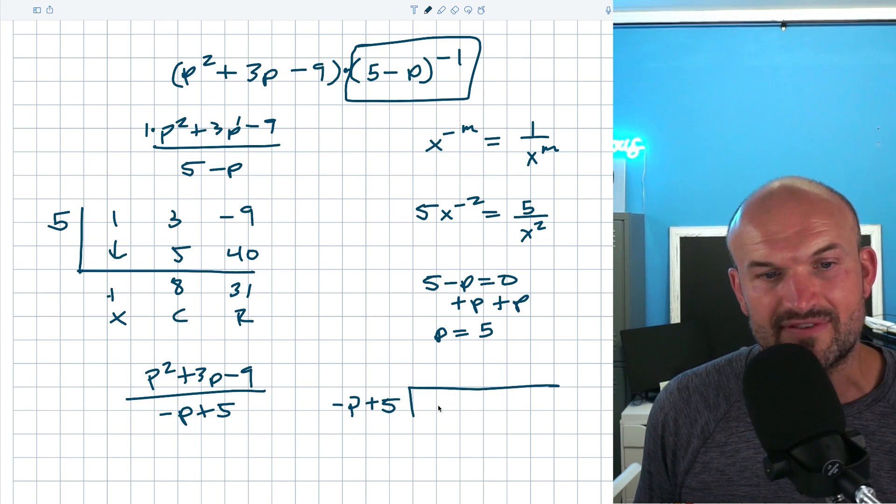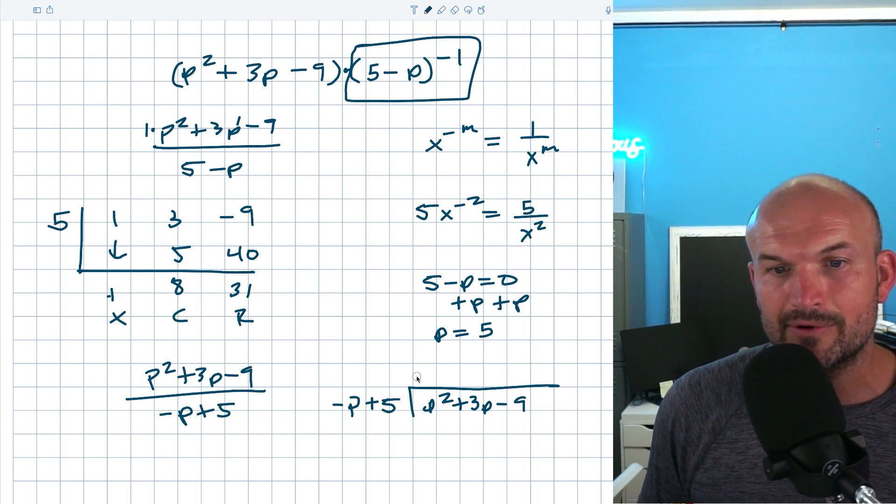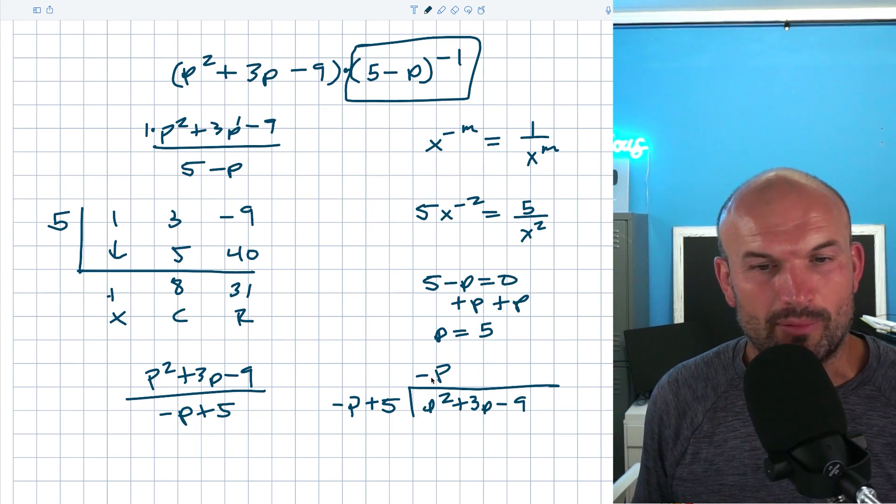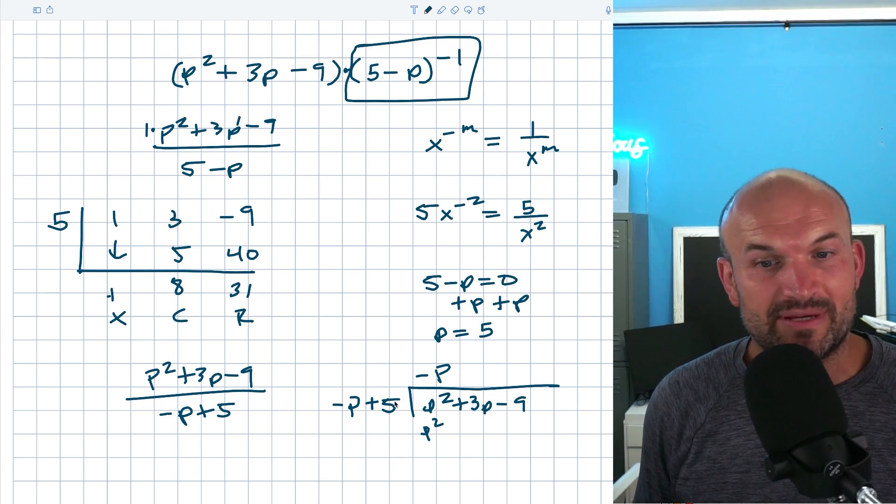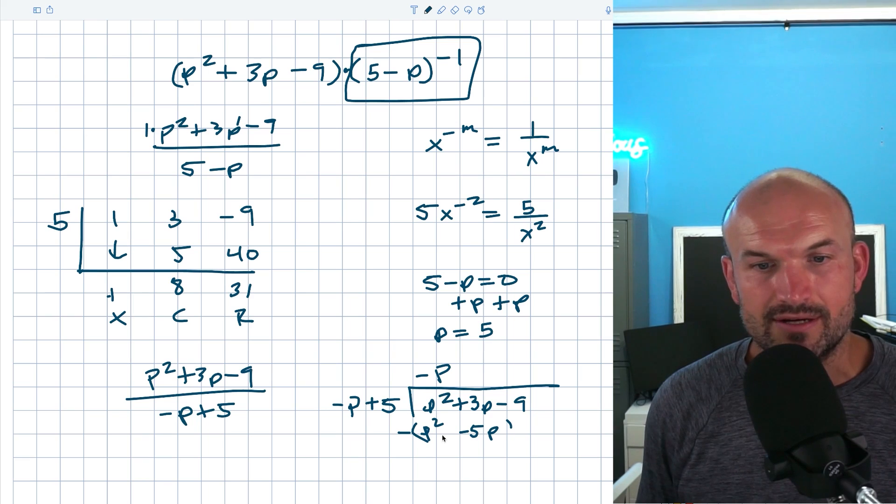If I go and write negative p plus 5 and write p squared plus 3p minus 9 in long division, what you can see here is when I divide negative p into p squared, I'm going to get a negative p. Now, again, let's just do this long division because it is such a short problem. Negative p times negative p is going to be p squared. Negative p times 5 is going to be a negative 5p. Go ahead and subtract the rows here, right?